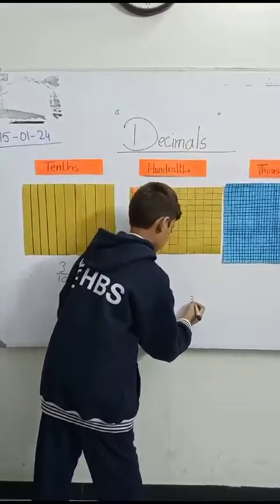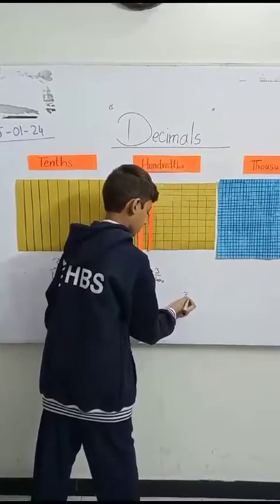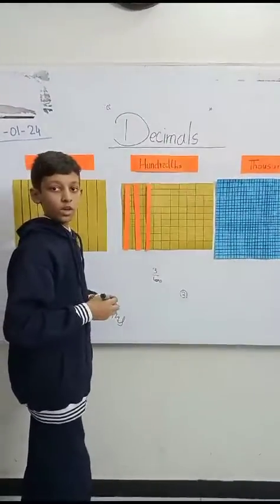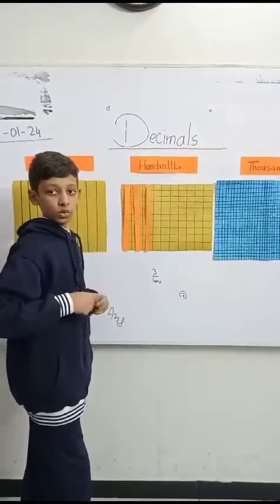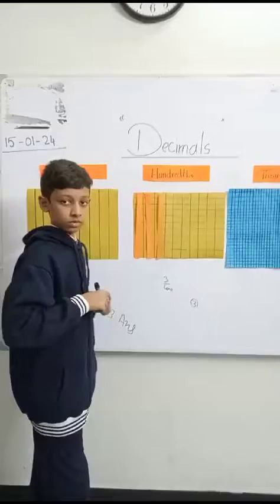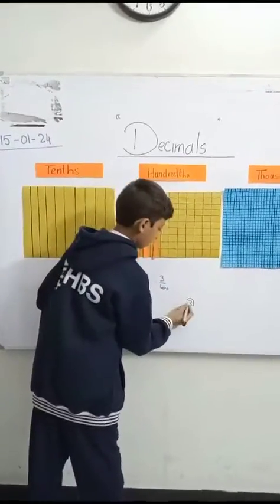There is an invisible decimal at last of each number. Yes. How many times you have to move? 1. 1 or 2? 1. No. 2. Yes. Because it is 100 now, so you have to move 2 times.